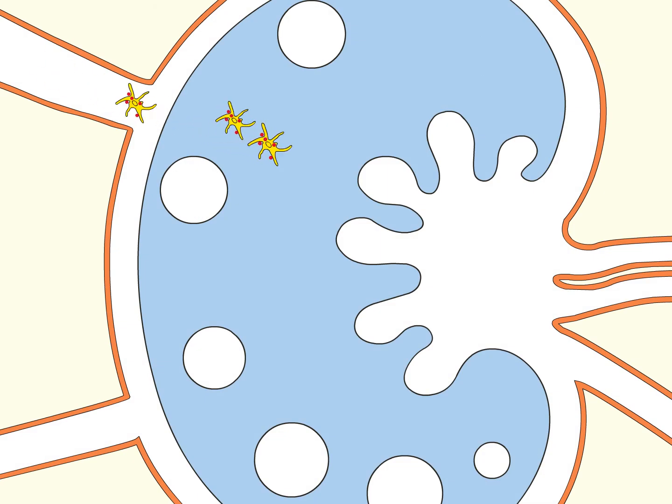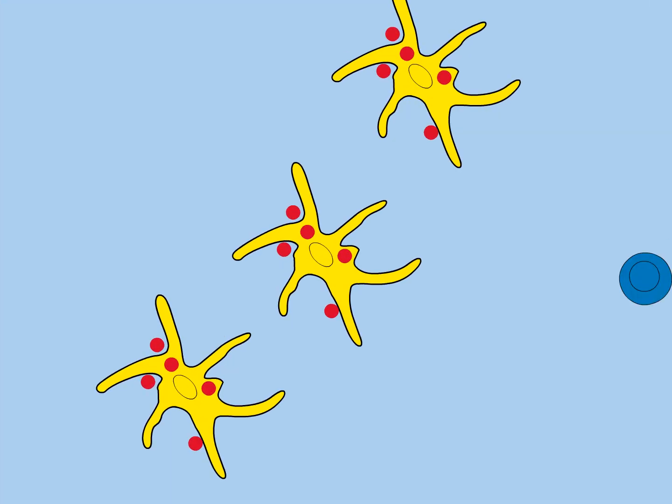T-cells migrating through the lymph nodes inspect the dendritic cells for the presence of antigen. T-cells that fail to recognize antigen on one dendritic cell carry on to inspect others and eventually return again to the circulation.